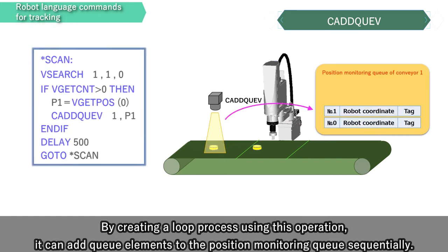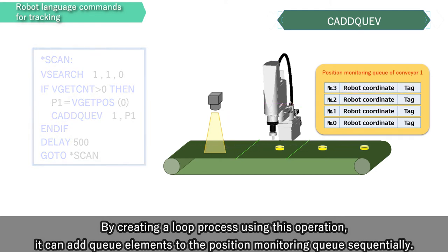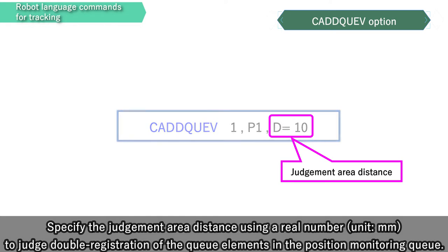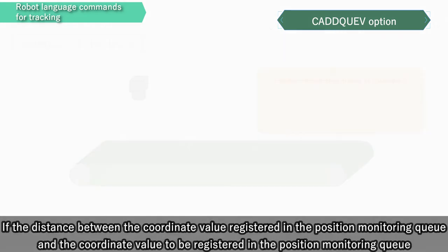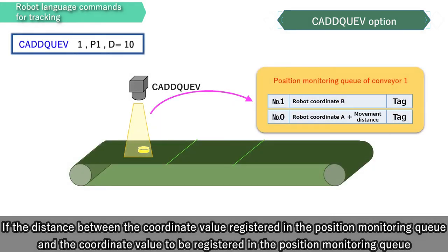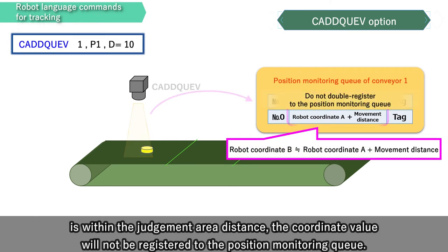By creating a loop process using this operation, it can add queue elements to the position monitor in queue sequentially. Specify the judgment area distance using a real number to judge double registration of the queue elements in the position monitor in queue. If the distance between the coordinate value already registered and the coordinate value to be registered is within the judgment area distance, the coordinate value will not be registered.